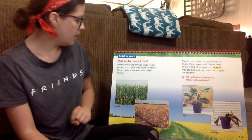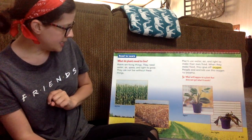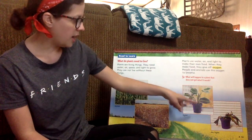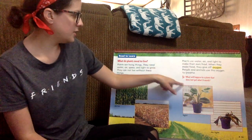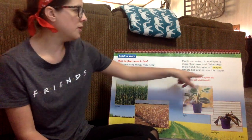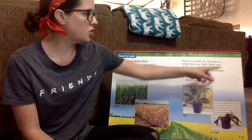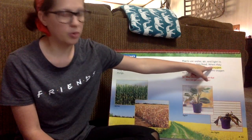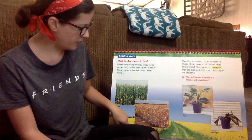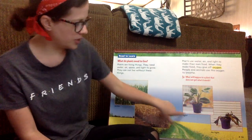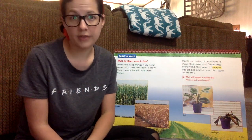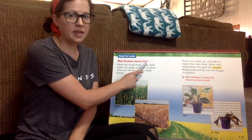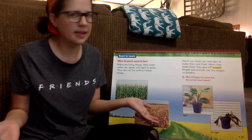All right, here we go. The first thing I notice on this poster is that I have got photographs. I've got some bold words — these words are red, so they must be important. This word is yellow, so it's dark and bold, but it's also highlighted in yellow, so it has to be important. And then I've got some little captions under here that tell me what these are photographs of. It says right here at the top: what do plants need to live? That's a question.